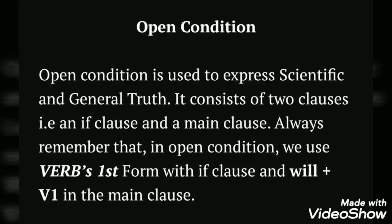The first condition is open condition. Open condition is used to express scientific and general truth. When we talk about general truth, we talk about scientific truth. It consists of two clauses — an if-clause and a main clause. Every conditional sentence will have two parts separated by a comma. The if-clause starts with 'if', and the second part is called the main clause. For example, 'if I were a doctor' — that is the if-clause, and the second part is the main clause.